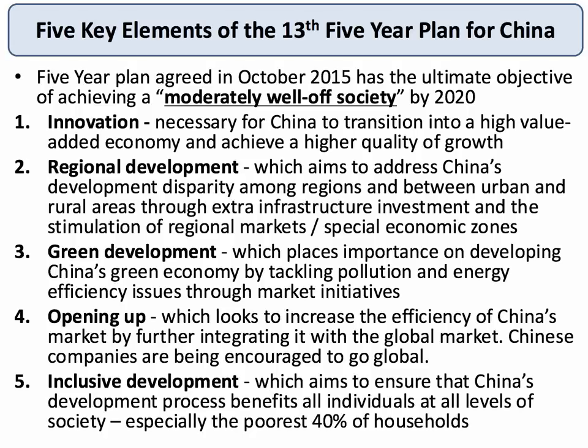The 13th Five-Year Plan, agreed in the autumn of 2015, is the current five-year plan and it's the most important one to consider in terms of the direction of travel the Chinese economy is likely to take. There are essentially five core elements in the plan, with the aim of China becoming a moderately well-off society by 2020.